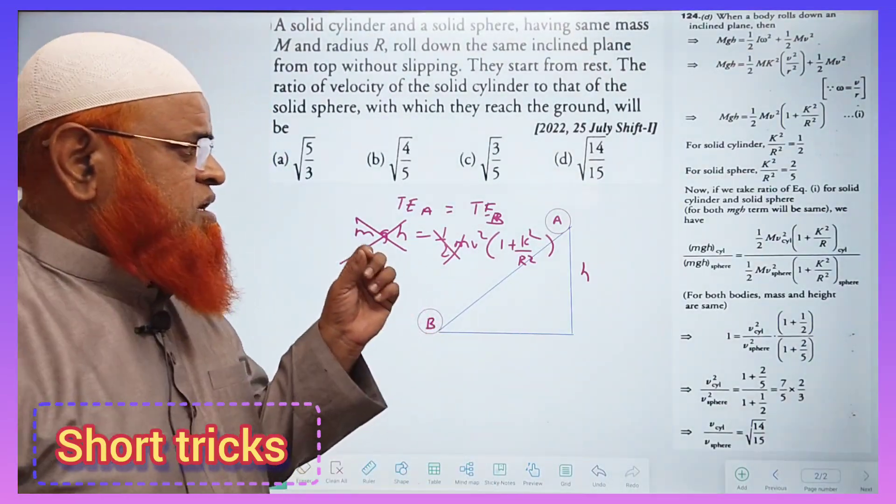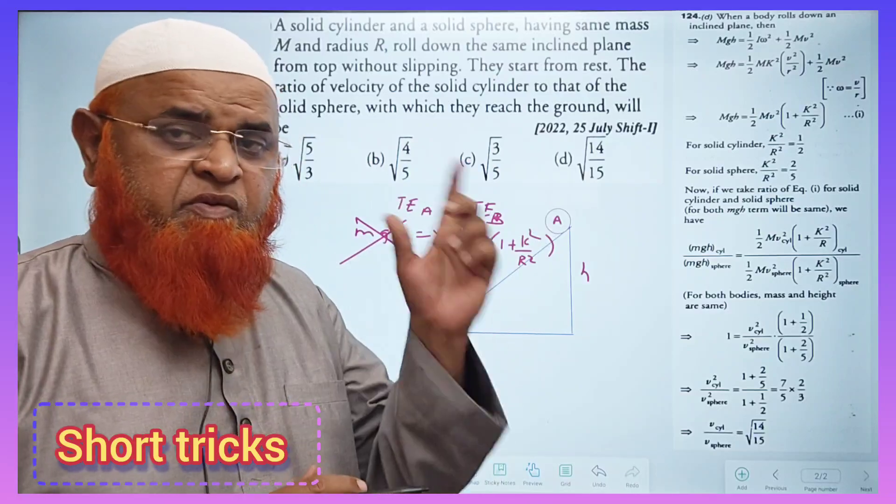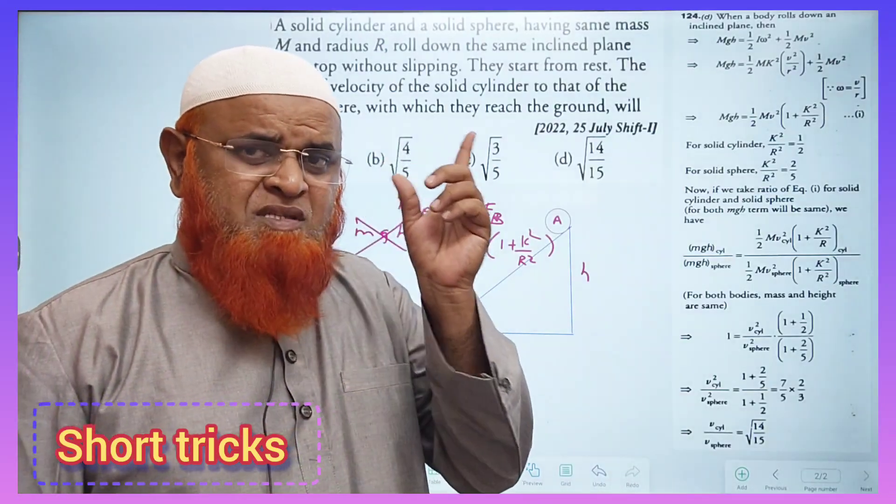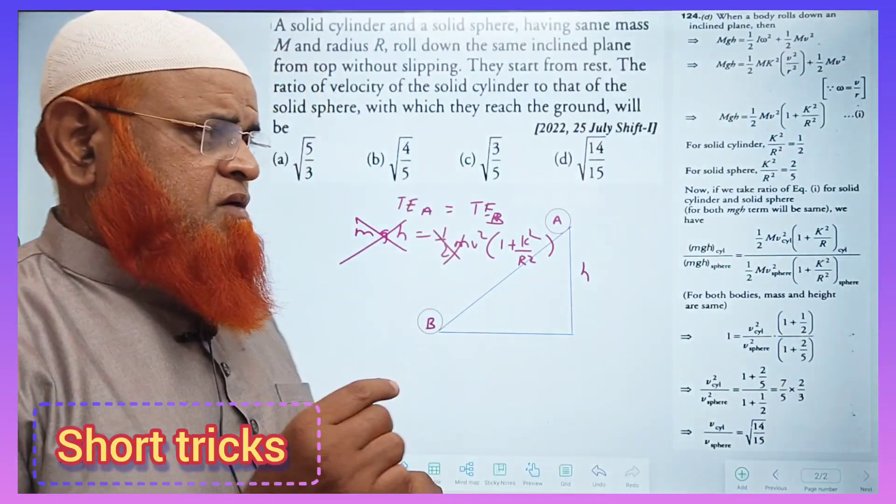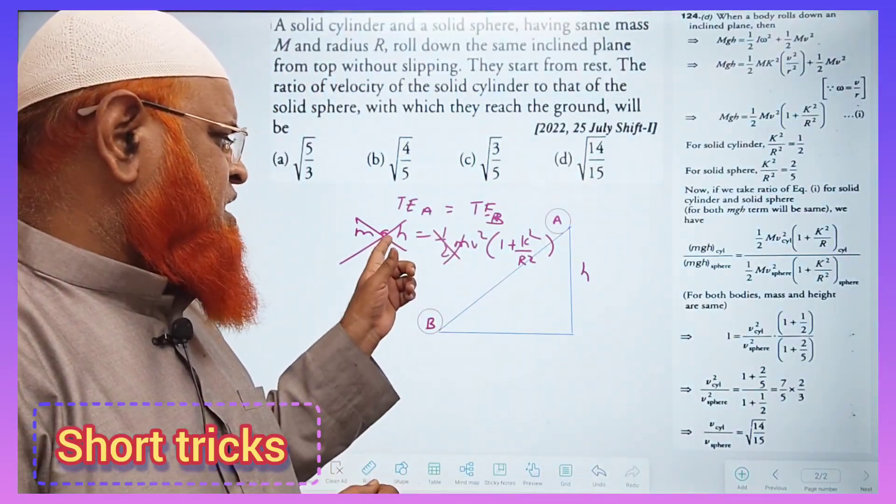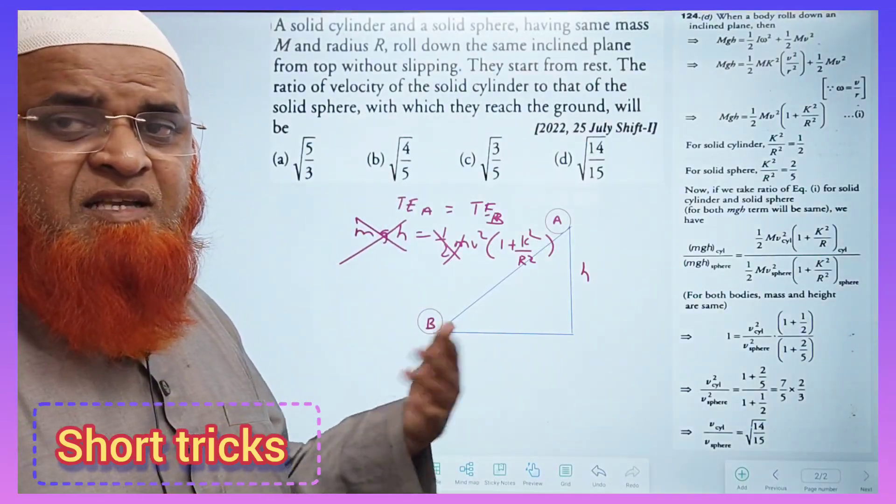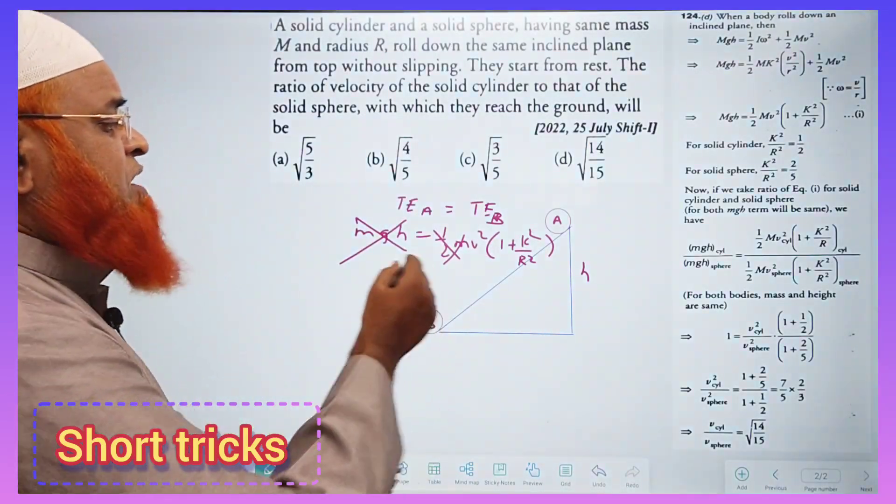Okay so in this case height is same but in the previous case which I have given in the problem, video number 163 I think, what was there? At that time only velocity was constant. Here height is constant. He is asking us to find out the ratio of the velocities.